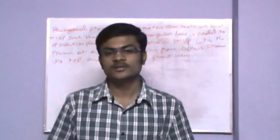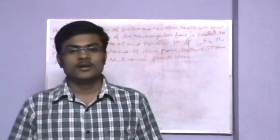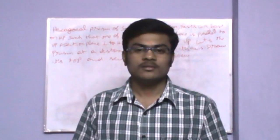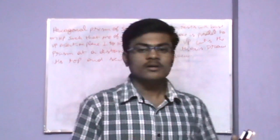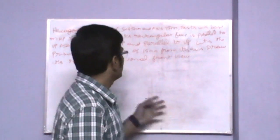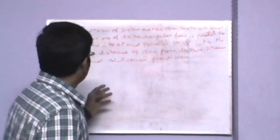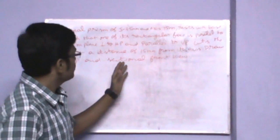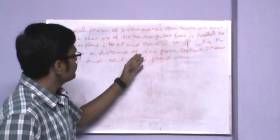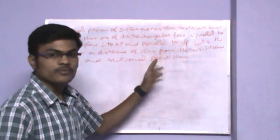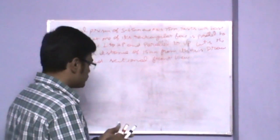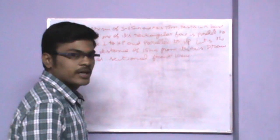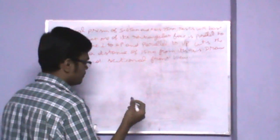What they have asked is we have to draw the section of solids. They are given that the solid is cut at a distance of 15mm from the axis. Let me show a small diagram in 3D so that it would be easy for us to draw in 2D.